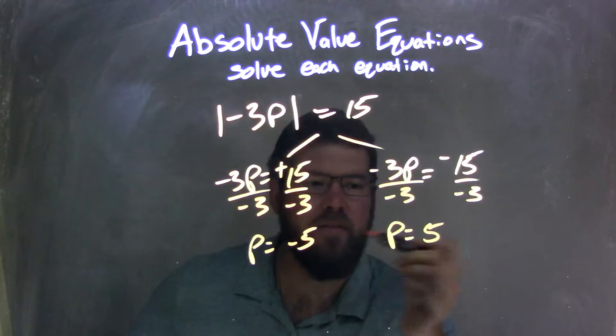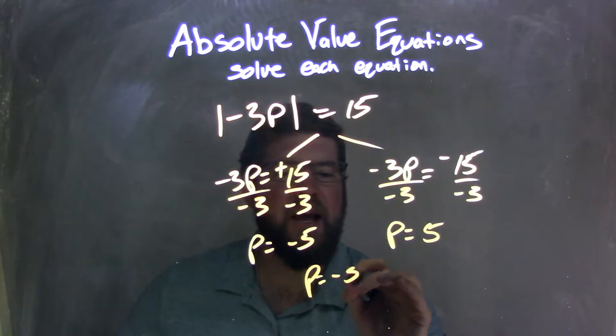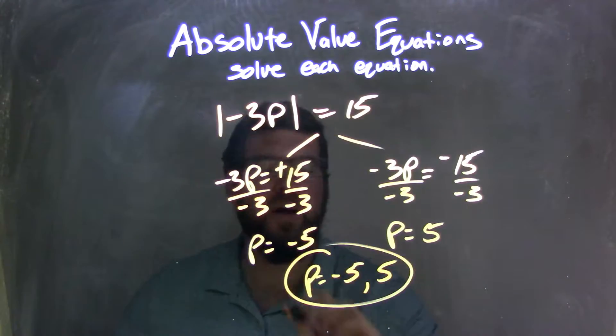And so my two answers are negative 5 and positive 5. To write it in one statement, p equals lower number first, negative 5, comma, positive 5. And there we go. That's my final answer.